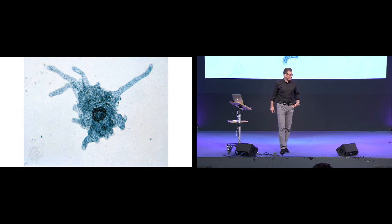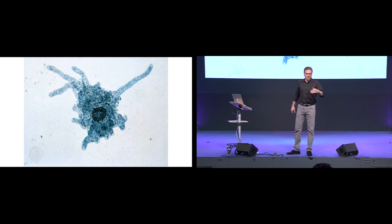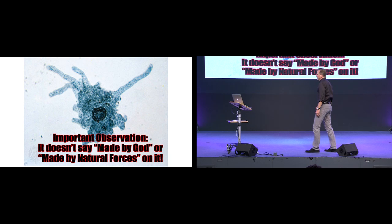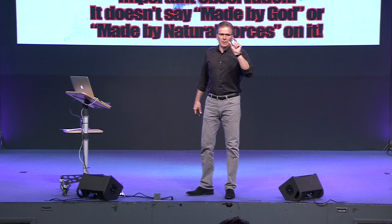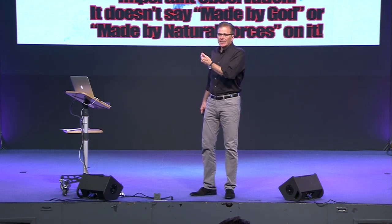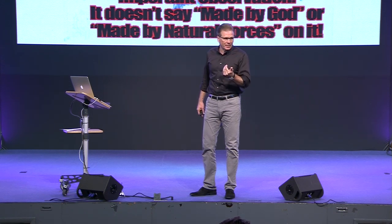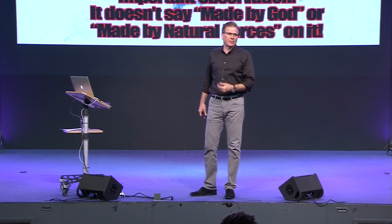You've heard of the theory of macroevolution — from the goo to you via the zoo. This was the goo. In Darwin's day, they didn't really know how complex a cell was. Notice it doesn't say 'made by God' or 'made by natural forces.' When you observe something like an amoeba, you have to make an interpretation: did it arrive by natural means, or by some sort of intelligence?